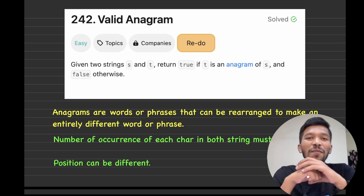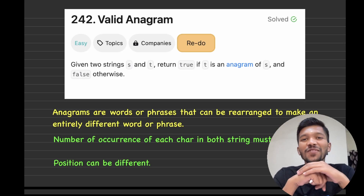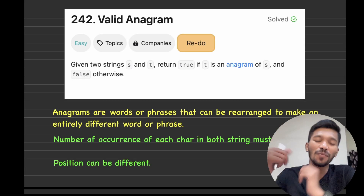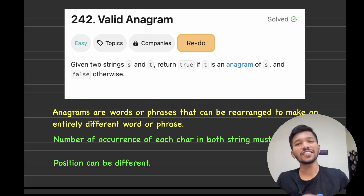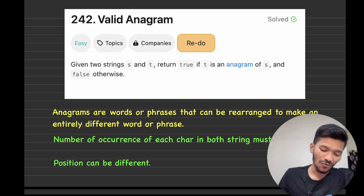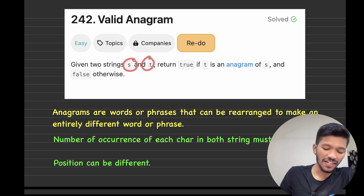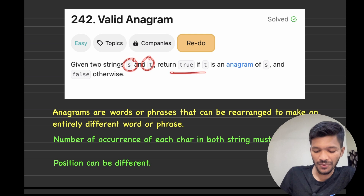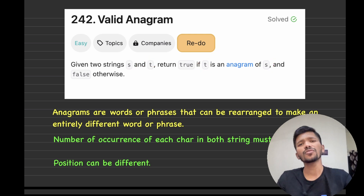Welcome to another video of data structures using Java. In this video, we will be solving a problem called valid anagram. The problem says that we are given two strings s and t, and we need to return true if the string t is an anagram of string s.